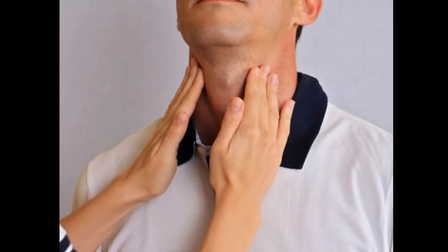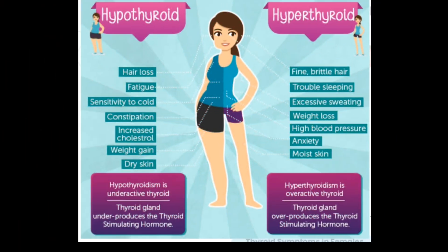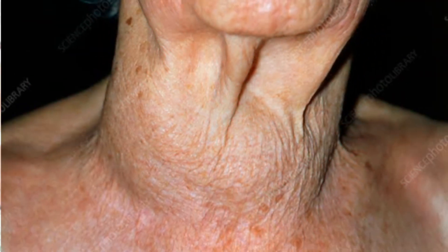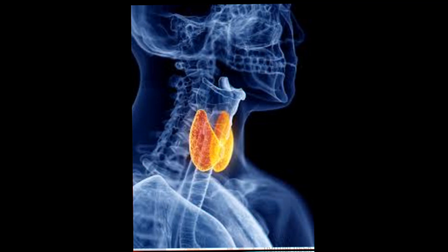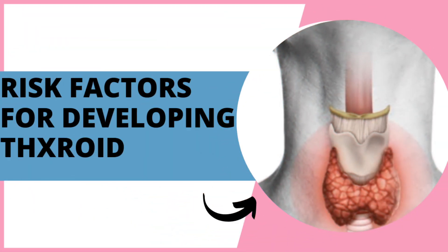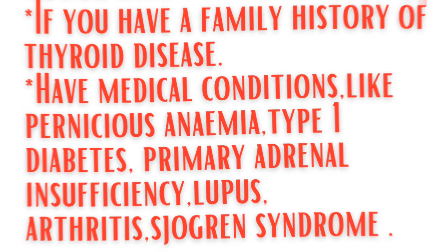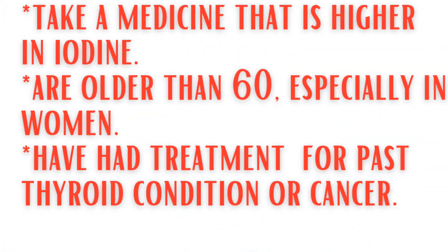Thyroid disease can affect anyone — men, women, infants, teenagers, and the elderly. It can be present at birth, typically as hypothyroidism, and can develop with age, often after menopause in women. You may be at higher risk if you have a family history of thyroid disease, or medical conditions such as pernicious anemia, type 1 diabetes, adrenal insufficiency, lupus, rheumatoid arthritis, Sjögren's syndrome, or Turner syndrome.